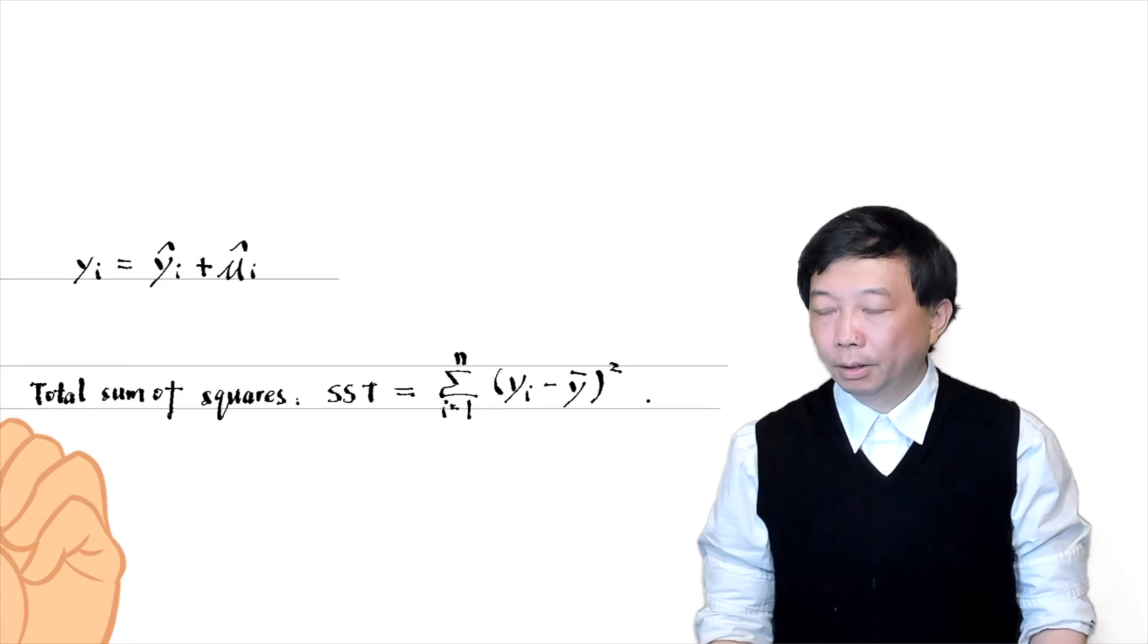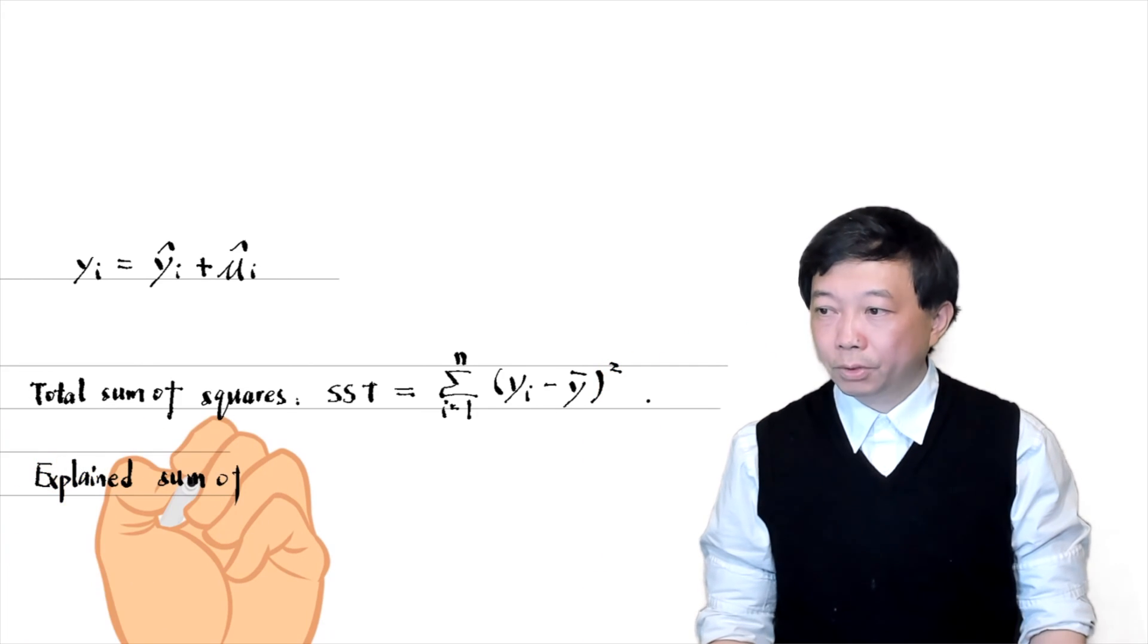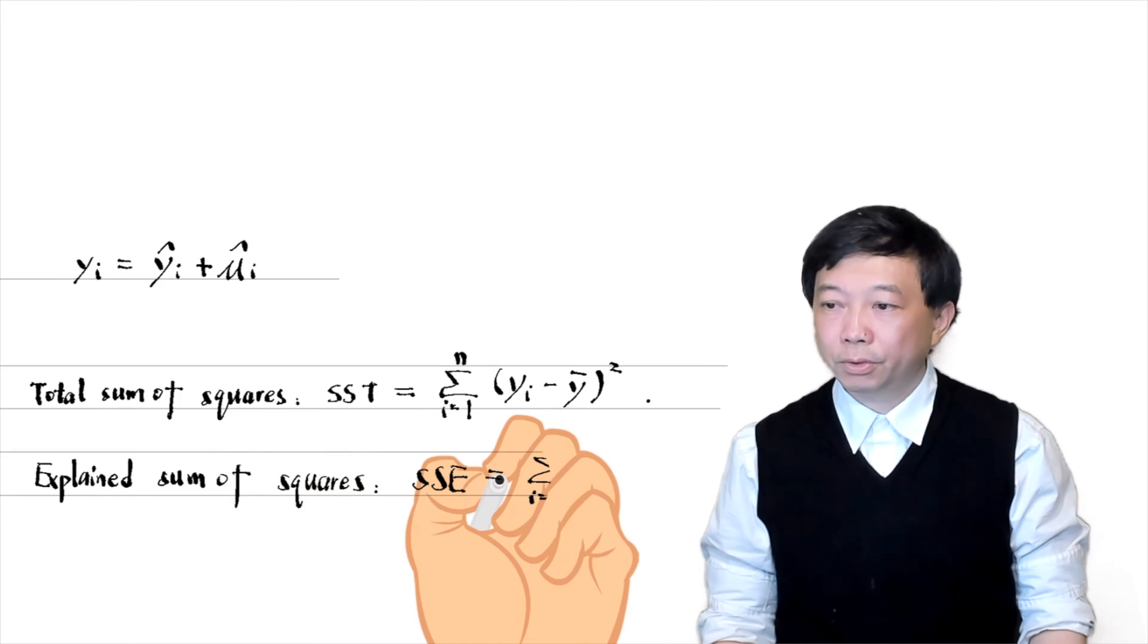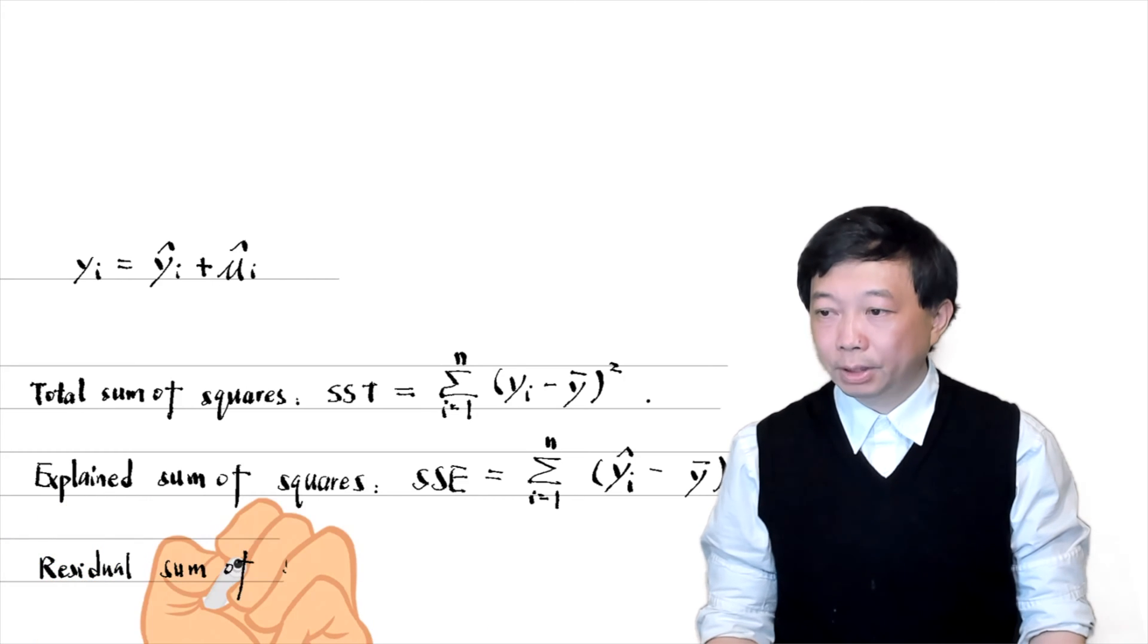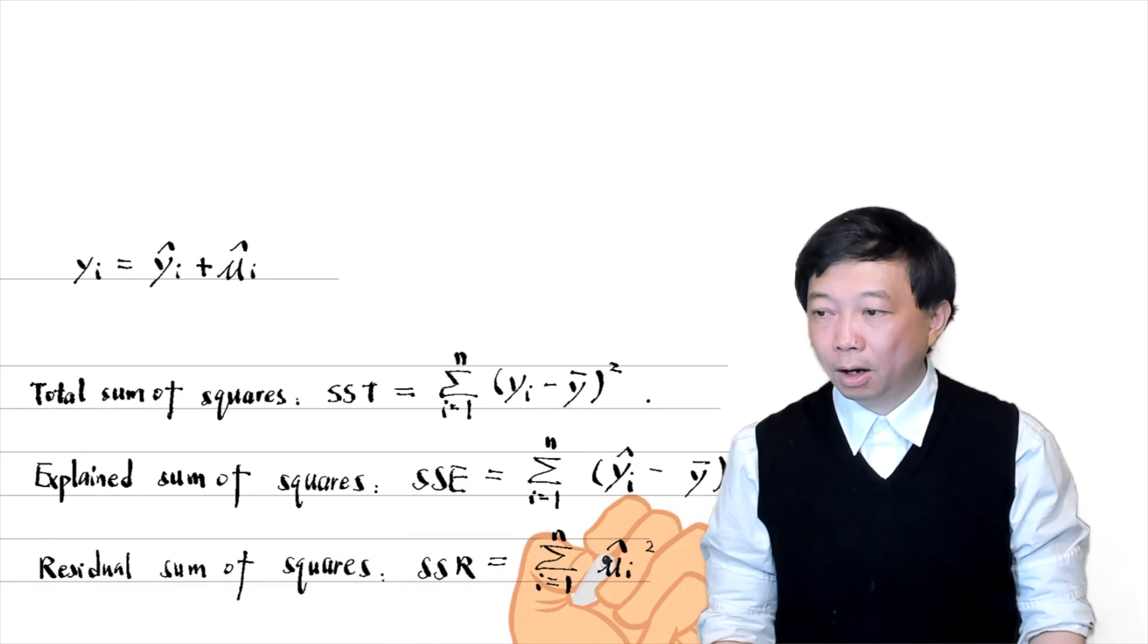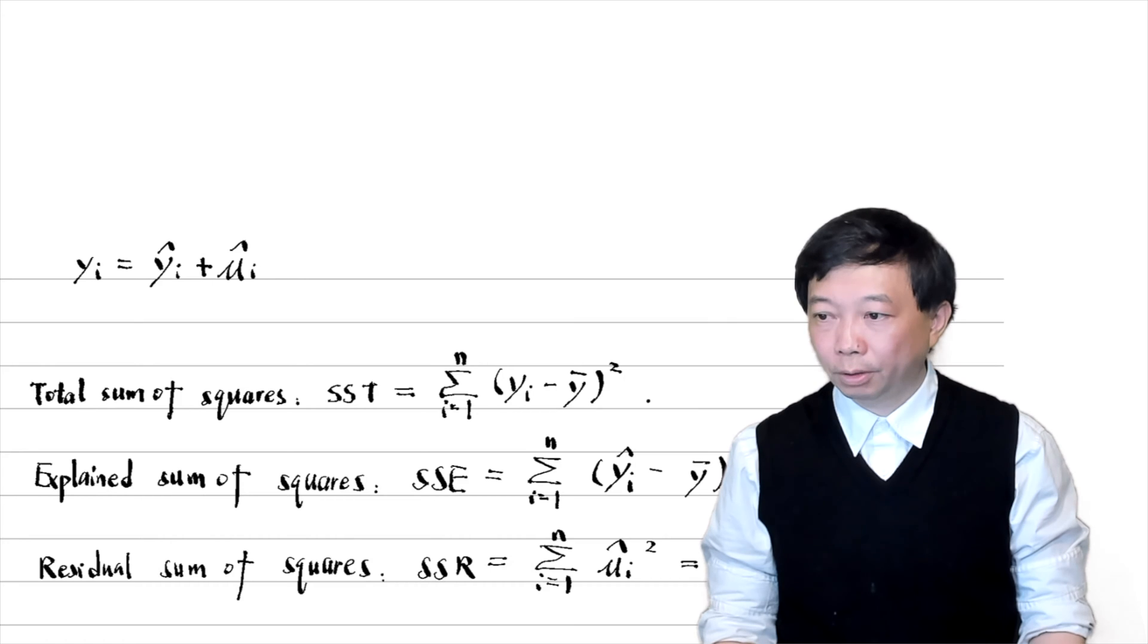Similarly, the explained sum of squares, SSE, measures the sample variation in the fitted value yi hat. And the residual sum of squares, SSR, measures the sample variation in the residual mu i hat.